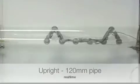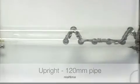First, starting with driving sideways through a 120 mm pipe, then next upright through the same pipe.